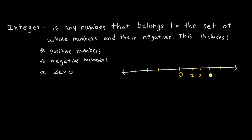When we move to the right, the numbers become bigger, and if we move to the left, the numbers have a minus sign, which indicates that these numbers are less than 0, smaller than 0, and moving to the left, the numbers will start to become smaller.